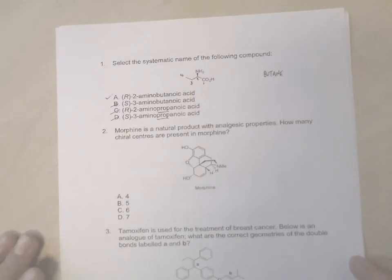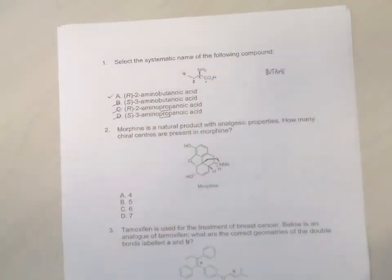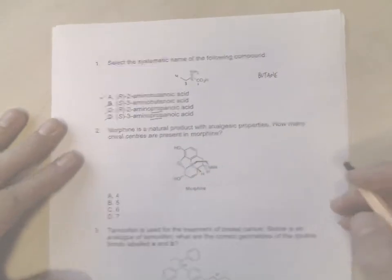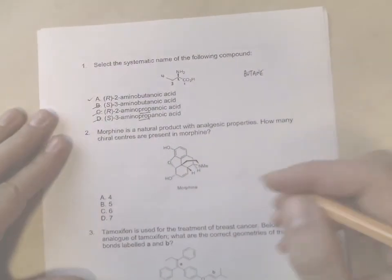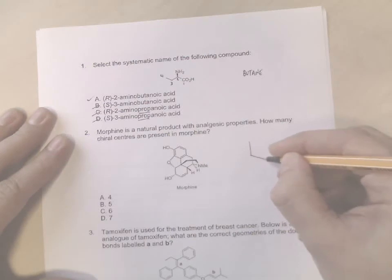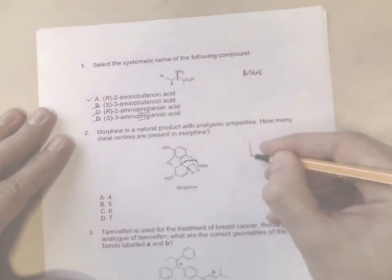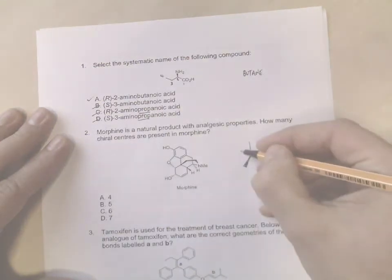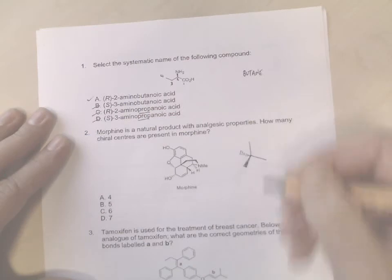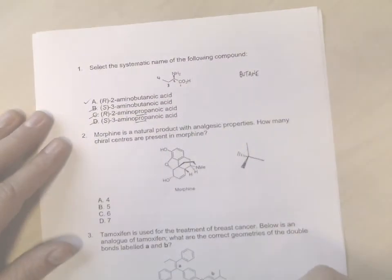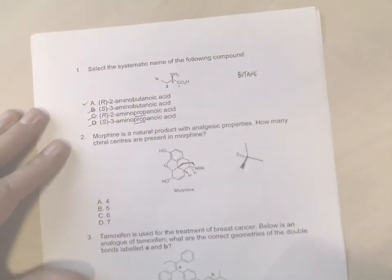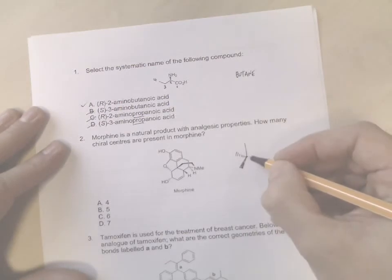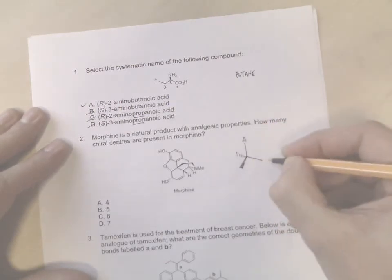Question two: Morphine is a natural product with analgesic properties. How many chiral centers are present in morphine? Well, remember in this course when we draw chiral centers, you draw two bonds in the plane of the paper, you draw a wedged bond which means coming out of the paper towards you, and you draw a dashed bond which means it's going into the paper or under the desk.